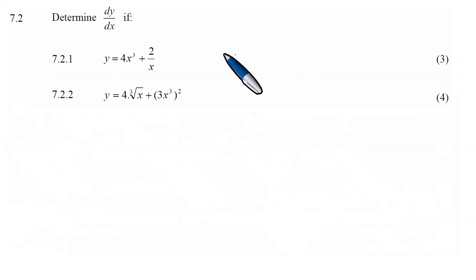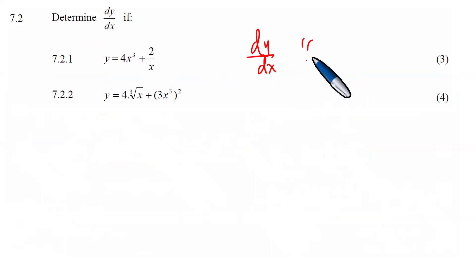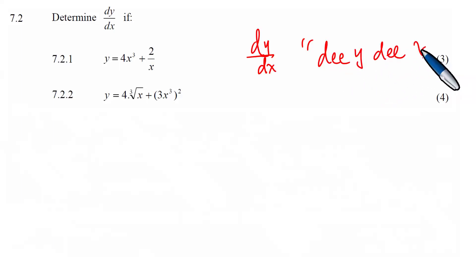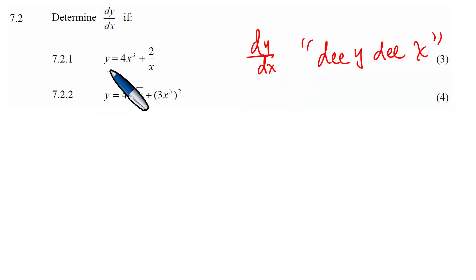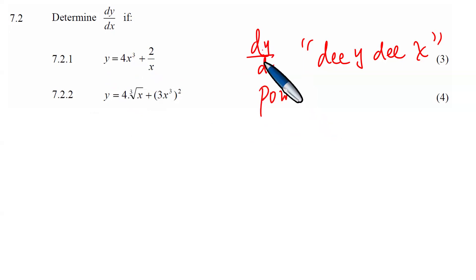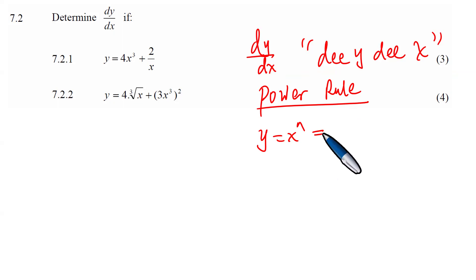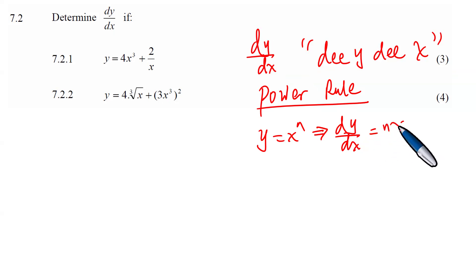Now we need to determine the dy/dx notation. Some of you are seeing this for the first time. This object is called an operator — it is called dy/dx. We read it as 'dy dx'. It is not dy over dx; it is not division. This is an operator and operators are not divided. To solve this kind of problem, we use the power rule.